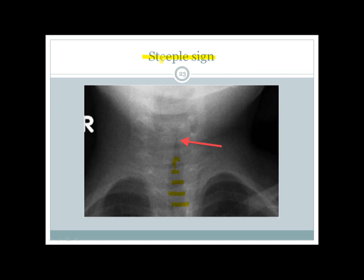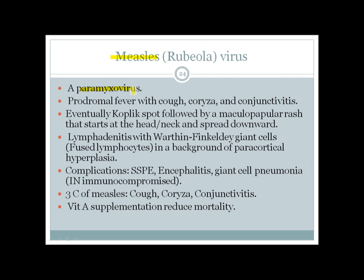Measles is part of the Paramyxovirus family. Its most important symptoms are the three C's: Cough, Coryza (cold), and Conjunctivitis. The patient presents with fever followed by these three C's, then the very classic Koplik spots, followed by a maculopapular rash starting at the head and neck spreading downward. There can also be lymphadenitis with paracortical hyperplasia and formation of Warthin-Finkeldey giant cells, which are fused lymphocytes.